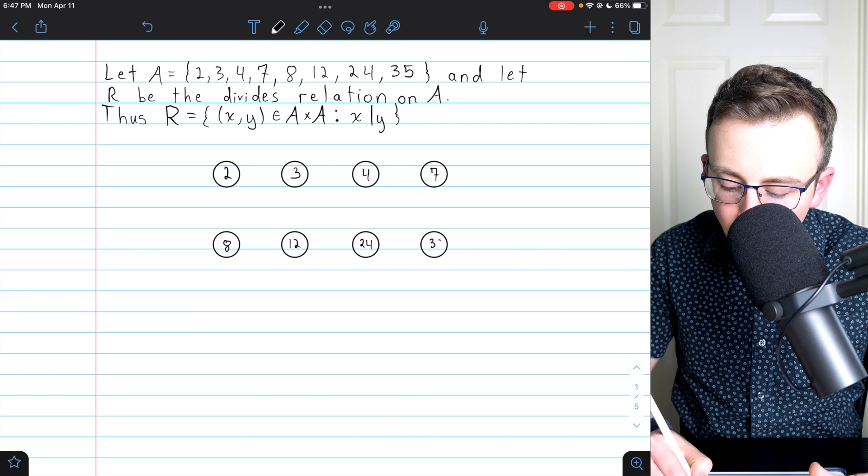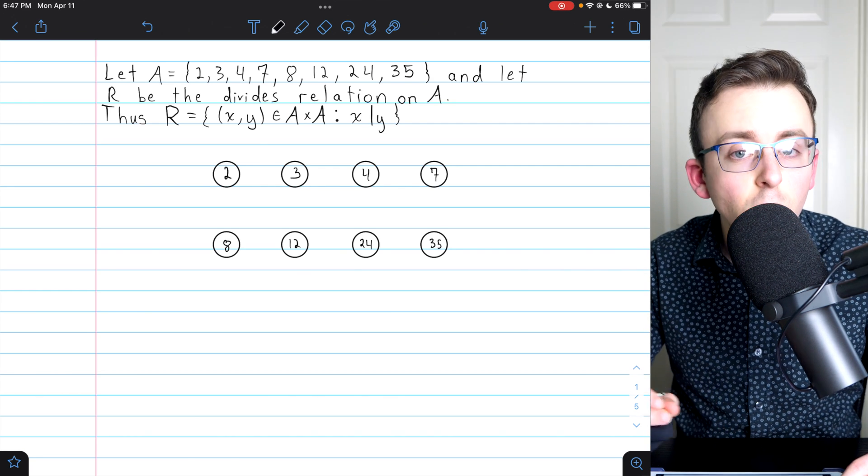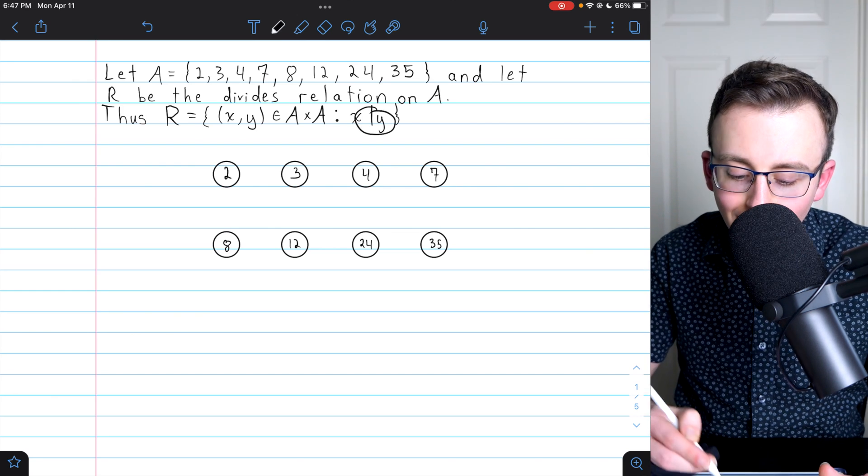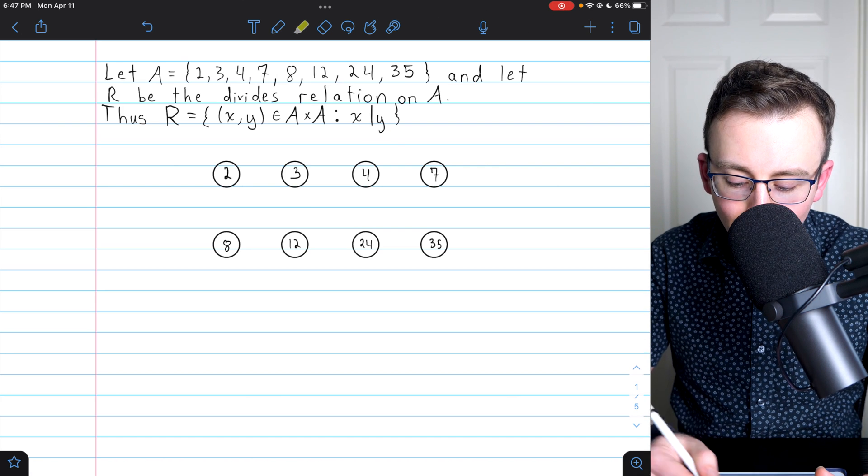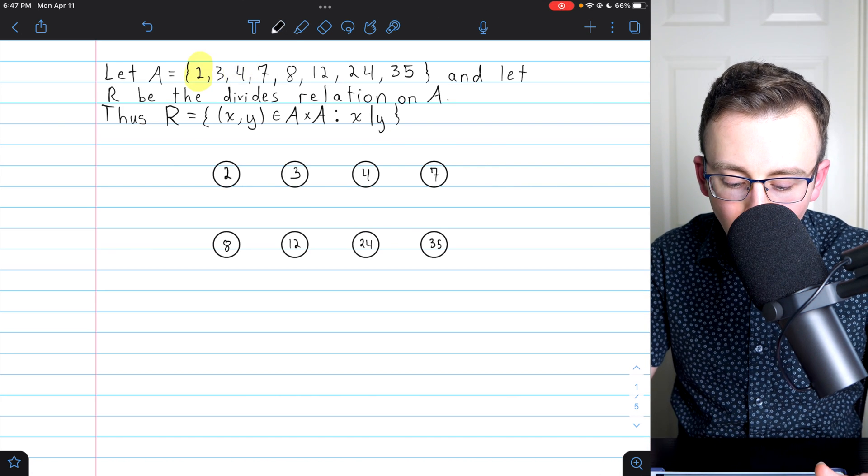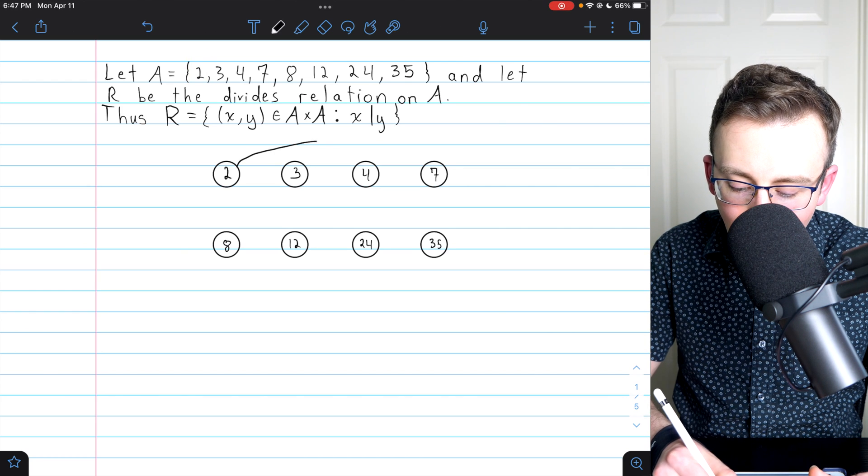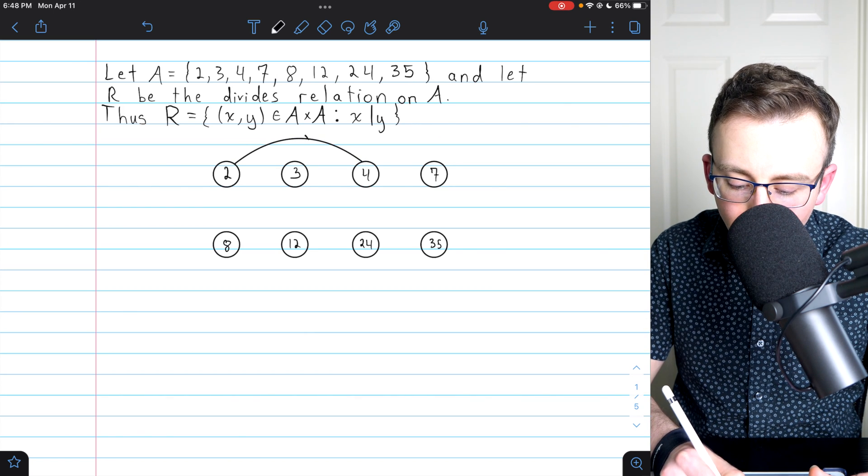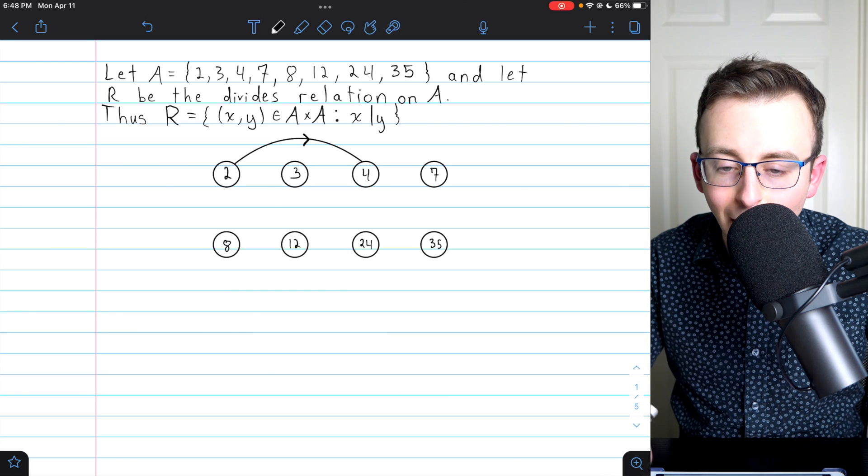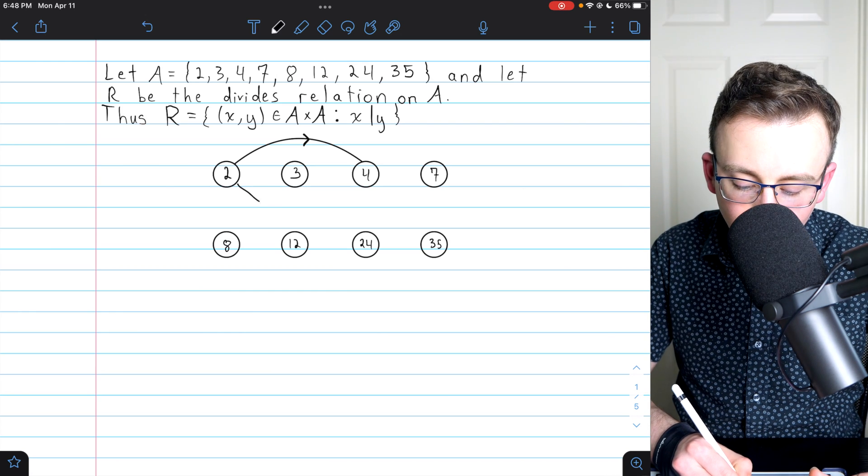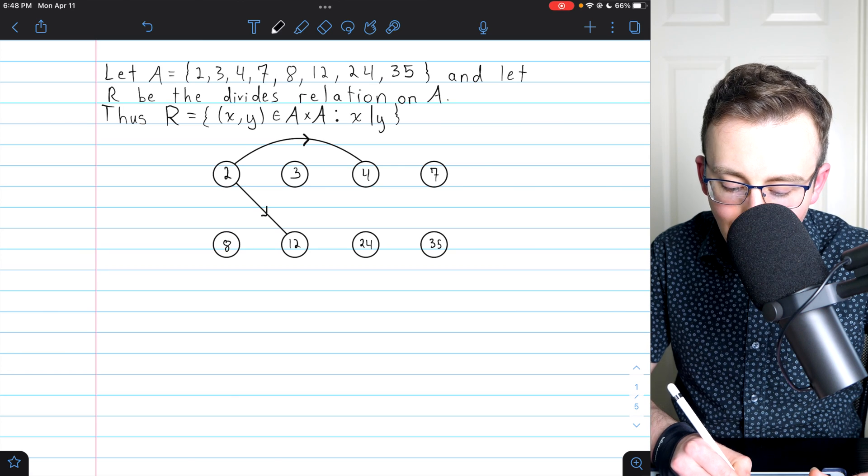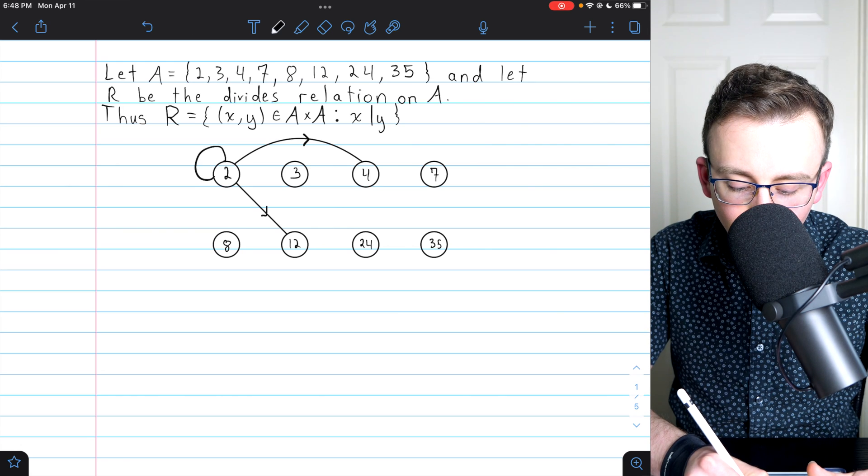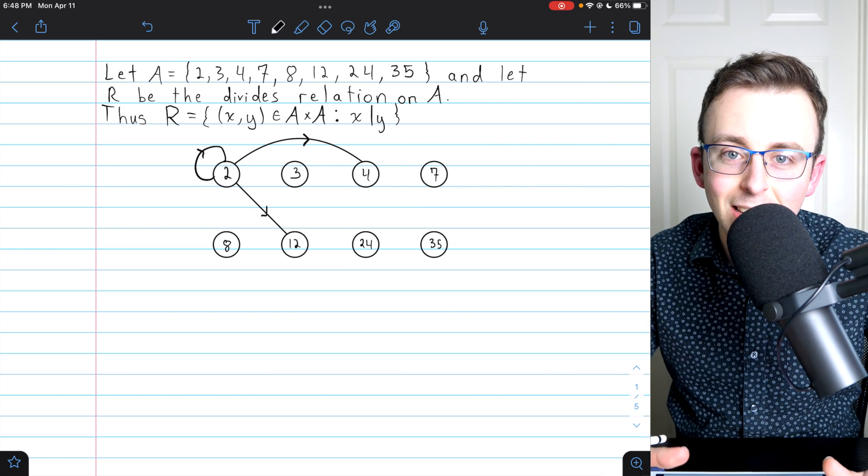Now, all we'll do is draw an arrow going from one element to another if they relate to each other in that direction. Remember, the relation is divides. So for an example, just to start us off, 2 divides 4. So in our diagram, I'll draw an arrow going from 2 to 4. I'll put some arrows on that line to indicate the direction of the relation. 2 also relates to 12, for example, so I'll also draw an arrow like that. 2 also relates to itself, so we'll also need this sort of loop on all of these circles.